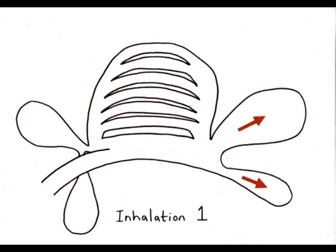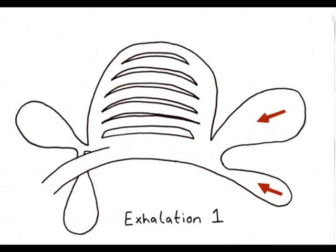During inhalation 1, air moves from outside the body through the trachea and into the posterior air sacs. In exhalation 1, the air then flows from the posterior air sacs into the parabronchi of the lungs where gas exchange takes place.